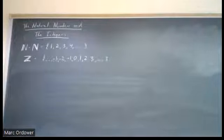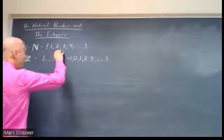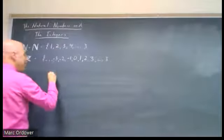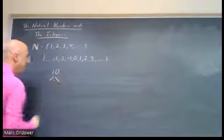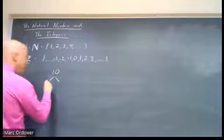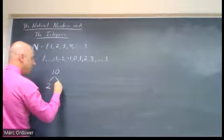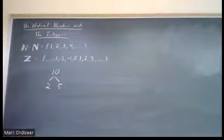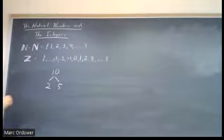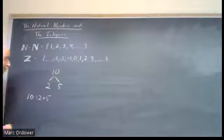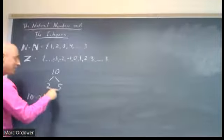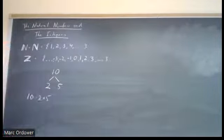I want to start off by factoring natural numbers. If I take a number like 10, I could factor 10 as two times five or five times two. So 10 is two times five, or it's five times two. And I can't factor these numbers any further than they are. Two and five are what are called prime numbers.